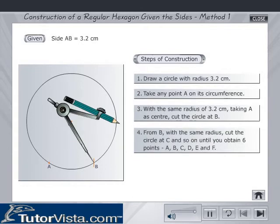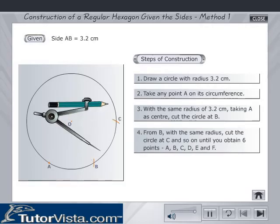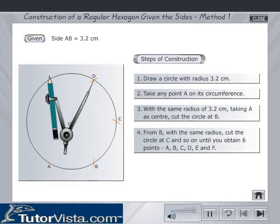From B with the same radius, cut the circle at C and so on until you obtain six points.